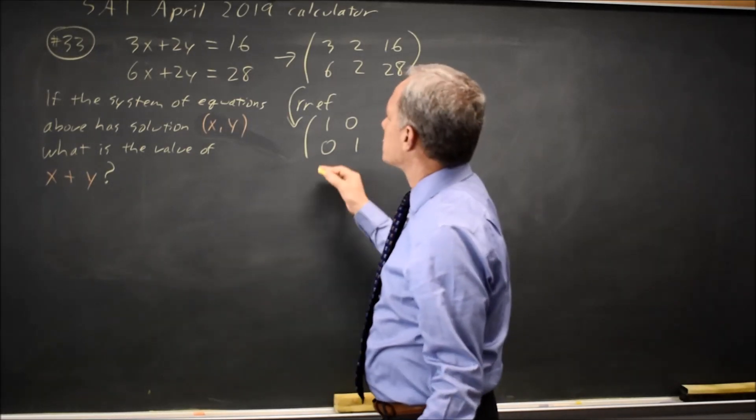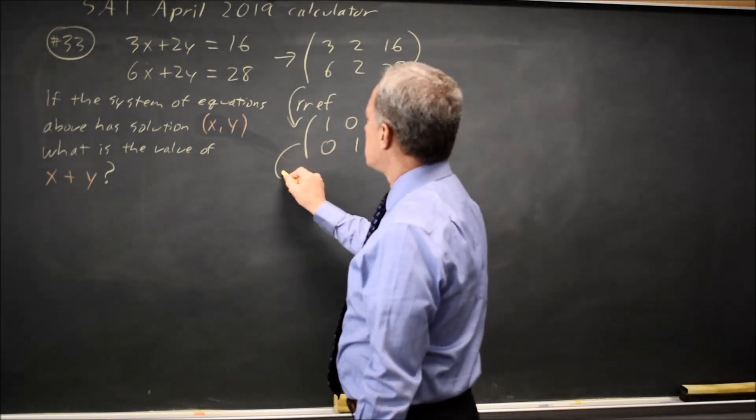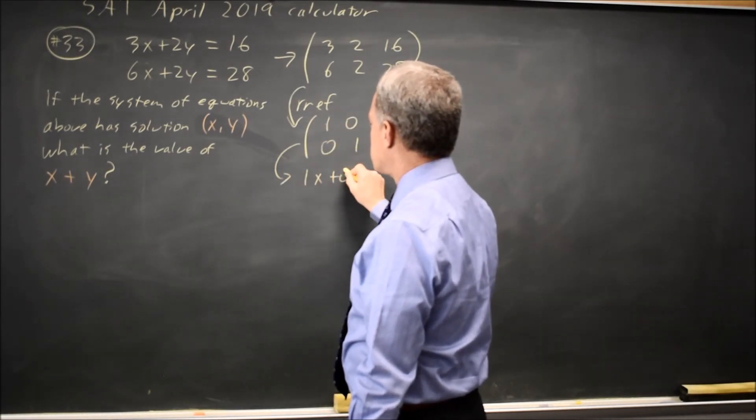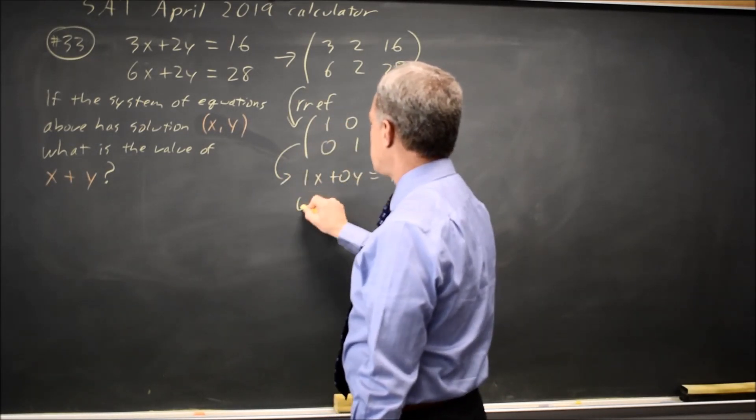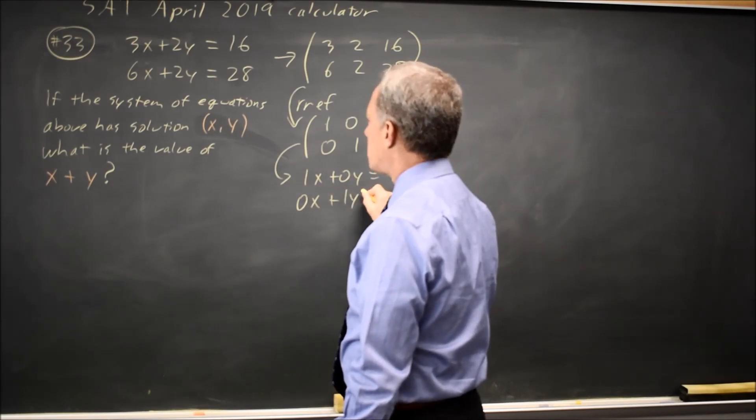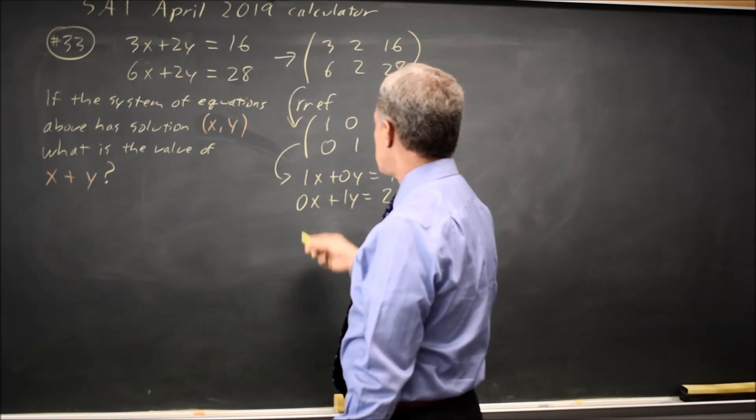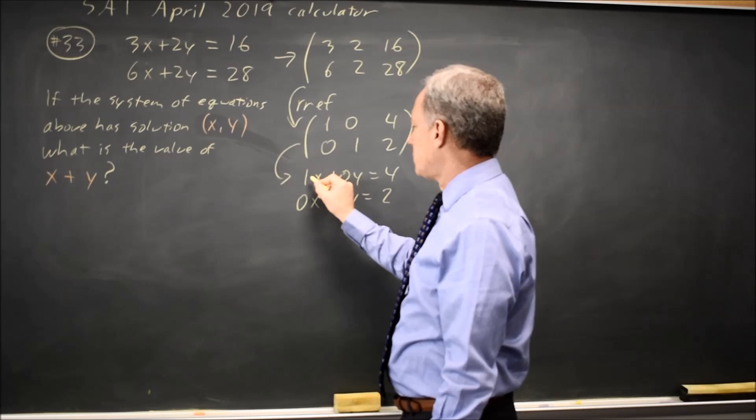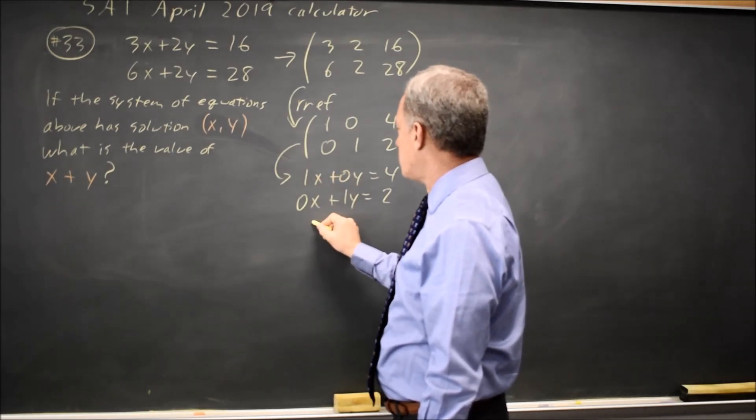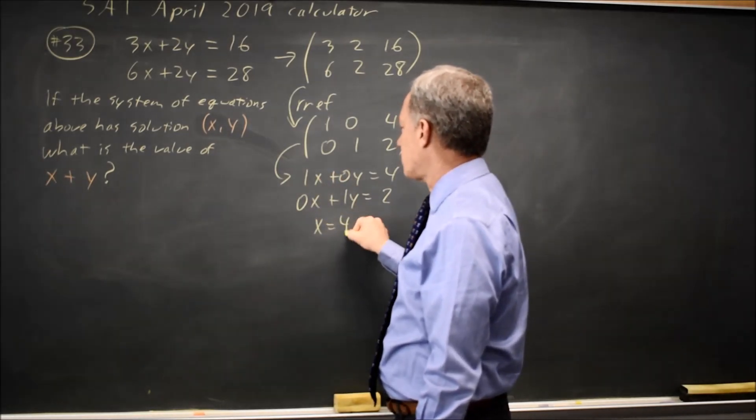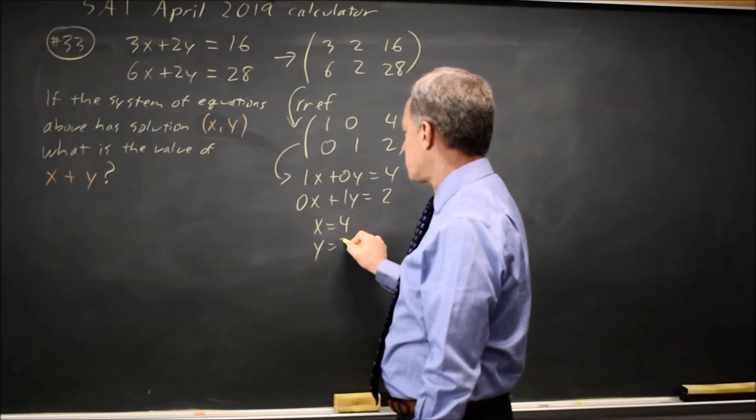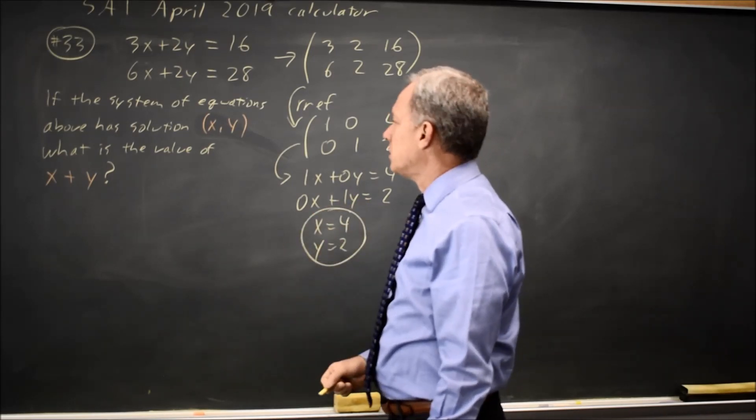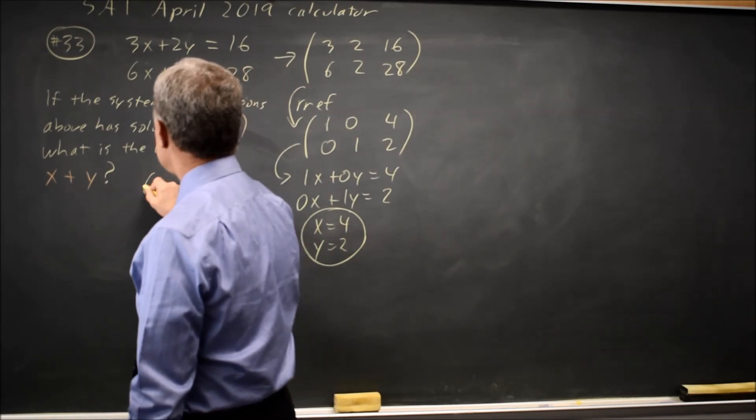Putting these coefficients back in as a system, this is the same as 1x plus 0y equals 4 and 0x plus 1y equals 2. Although most people won't write this step because this simplifies to 1x equals 4, so x equals 4, and 1y equals 2, so y equals 2 as our solution. So that value of x plus y is 6.